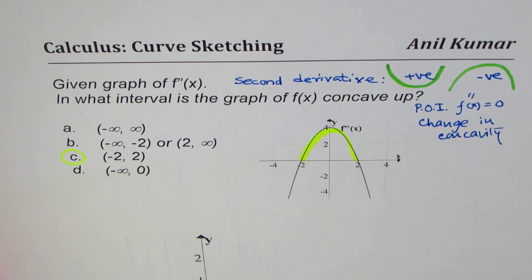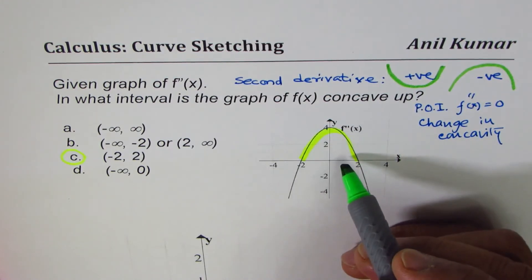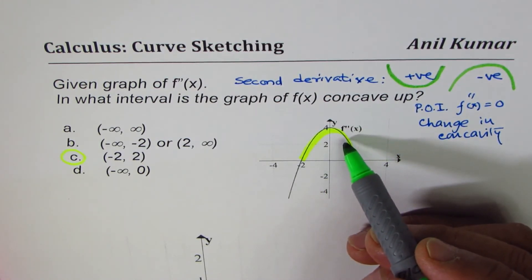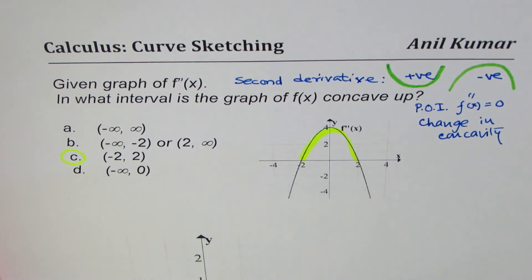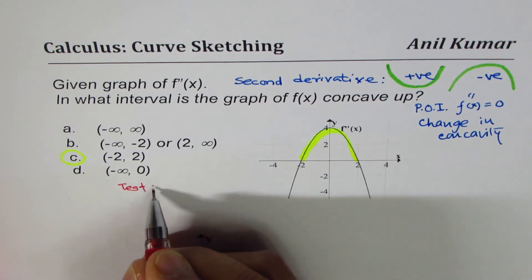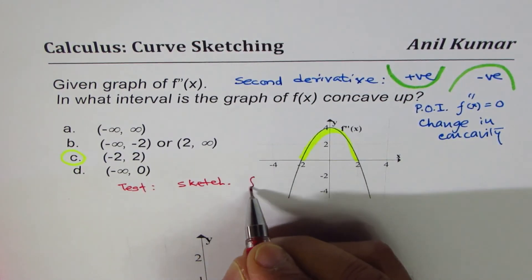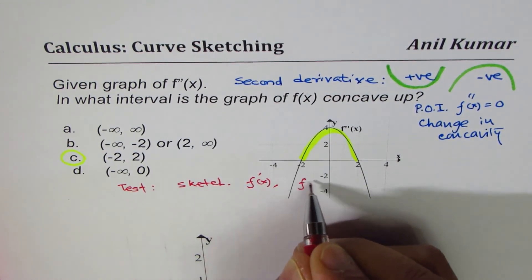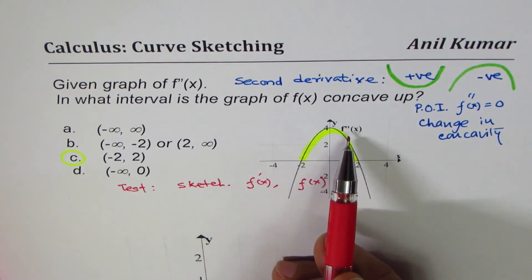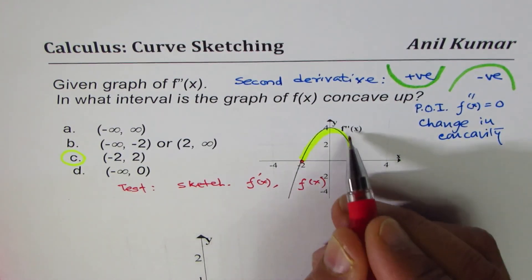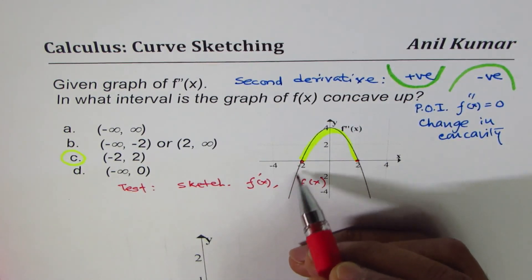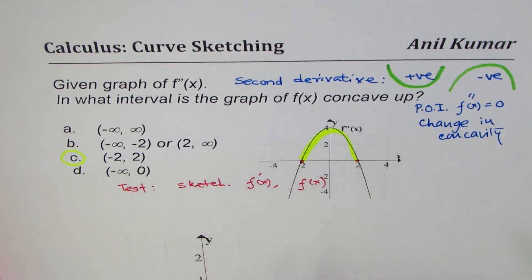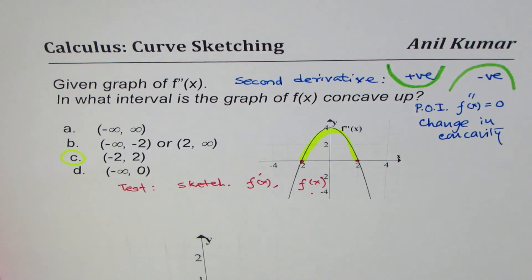So the answer is the interval from minus 2 to 2 — choice C — where the function is concave up. Since this is the second derivative, the derivative will be a cubic function and the function itself will be quartic. As an exercise, sketch the derivative and the function from the second derivative. The zeros of the second derivative become the turning points of the derivative, and the negative/positive regions tell you the concavity of the function.